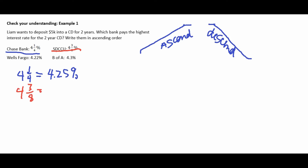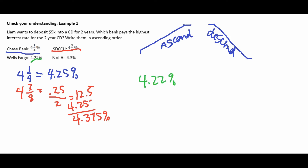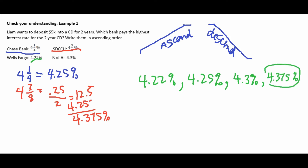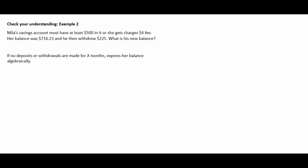Three-eighths equals 0.125, so 4⅜ = 4.375%. In ascending order: Wells Fargo at 4.22%, Chase at 4.25%, Bank of America at 4.3%, and SDCCU at 4.375%. In this case, Liam would want to pick SDCCU because it has the highest interest rate.